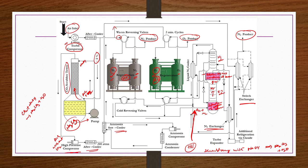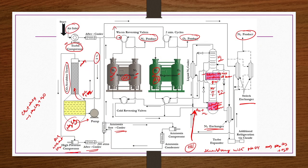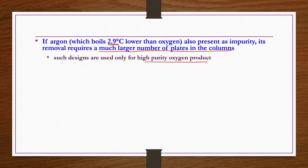This is the process for low purity tonnage oxygen production in addition to nitrogen production. If argon, which boils at 2.9 degrees centigrade lower than oxygen, is also present as an impurity, its removal requires a much larger number of plates in the fractionation column. Large numbers of plates are required for high purity separation by distillation, and such designs are used only for high purity oxygen products.